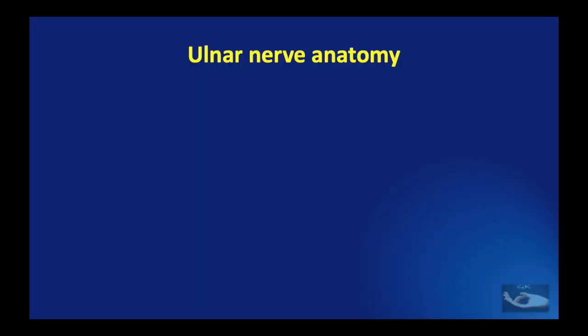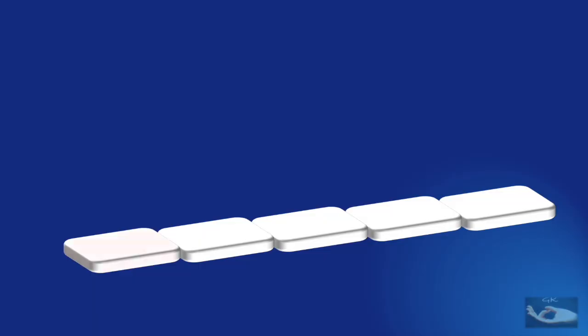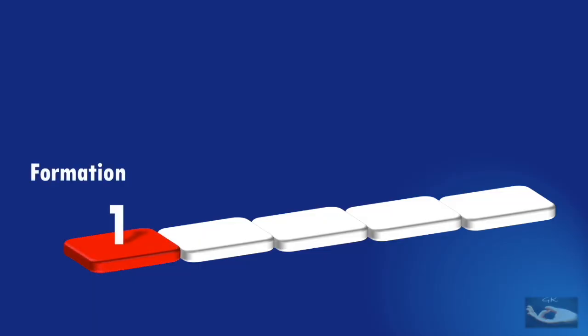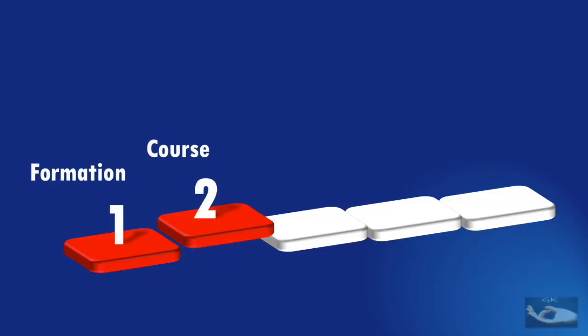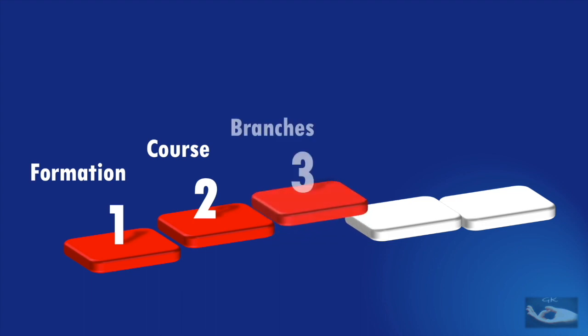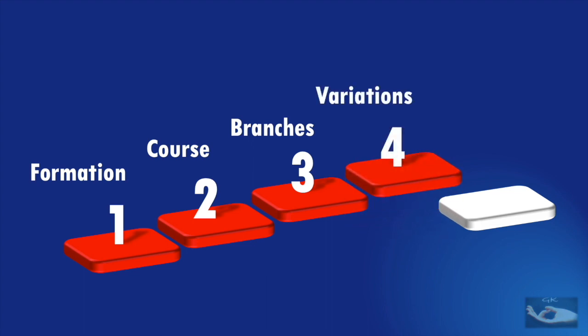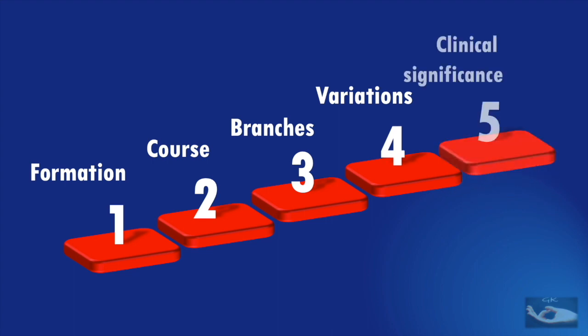We shall deal with the ulnar nerve anatomy in a very structured manner. We shall first see how the ulnar nerve is formed, then consider the course and branches at various segments of its travel around the upper limb, then see the anatomical variations that can exist, and finally the clinical significance of the anatomy.